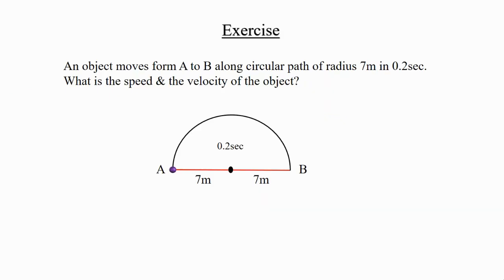Now, students, exercise for you. An object moves from A to B along a circular path of radius 7m in 0.2 seconds. What is the speed and the velocity of the object?